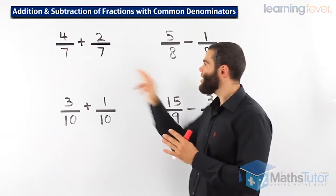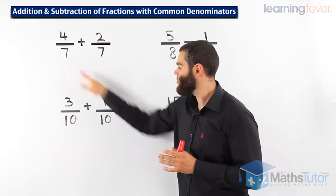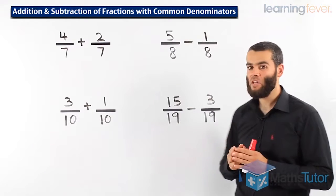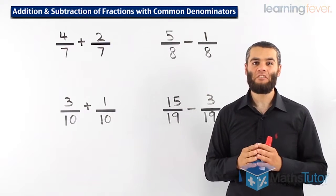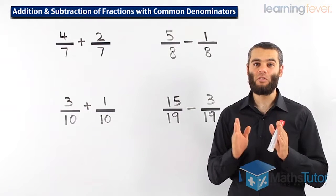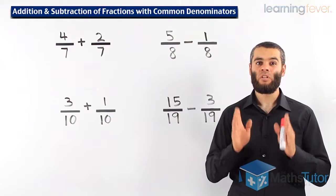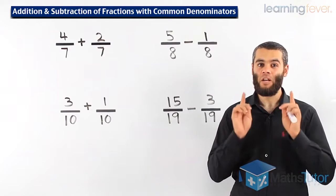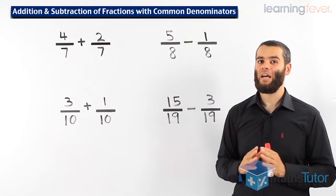Common denominators means that the denominators are the same. They are the same here, they are the same, and they are the same. Once we have common denominators, we can actually add or subtract fractions. That is the rule. We can only add or subtract fractions when we have common denominators. Remember that all the time. Let's see how it's done.